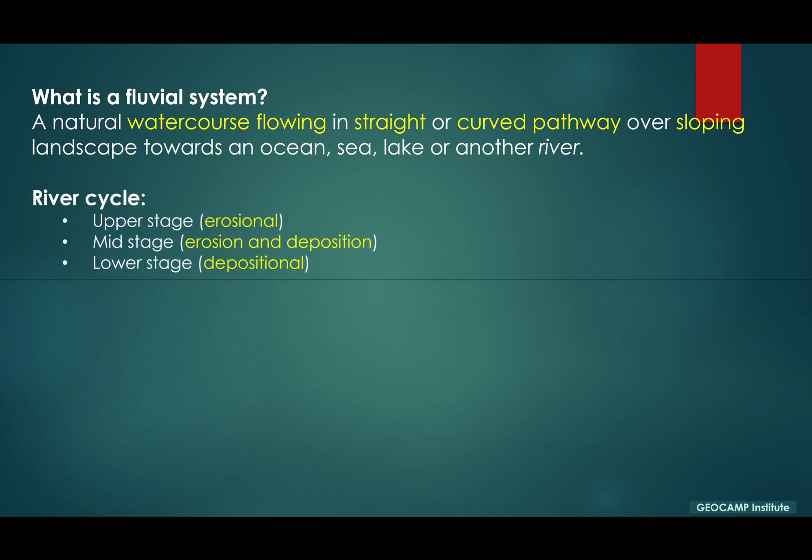Typically there are three stages for a river cycle: the upper stage, more in the upslope areas, which is largely erosional; the mid stage, which has erosion and deposition at the same time depending on where you are in the basin; and the lower stage, which is dominantly depositional.